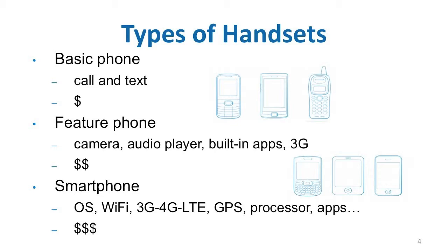Feature phones lay somewhere between basic phones and smartphones as far as their features and pricing. They offer quite a number of capabilities, for instance, an ability to capture high-resolution images, listen to music, connect to social networks via built-in apps, or charge the battery using a built-in solar panel. With the advancement of technology, feature phones have become more and more like smartphones.